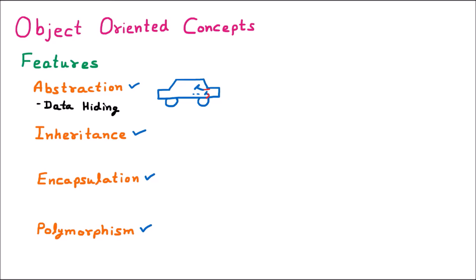The next feature is inheritance. Let us suppose we have designed the code of a clock. Now this code I want to inherit into some other code — let us suppose I am developing a window and I want that clock code to come into it. So instead of writing new code, I will inherit the previous code. Whenever we use previous code that way, it is called reusability.